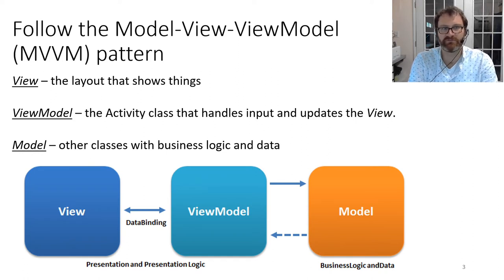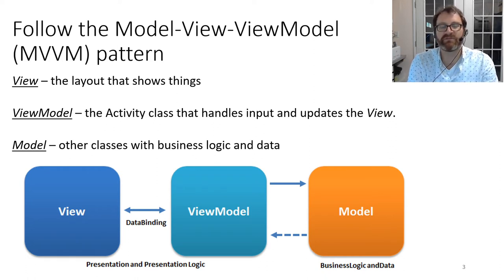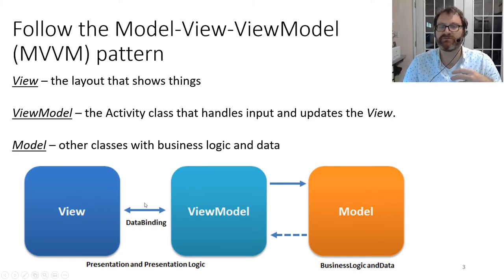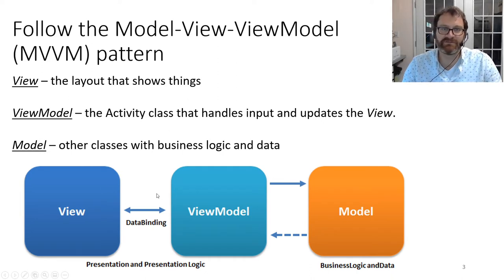The MVVM pattern is called that because of its constituent parts. The view, just like in model-view-controller, is the part of your code that shows something to the user — it is the display. In Android apps, this is the layout. The second component is the view model. The view model in Android is your activity class. So you have the view, which is the XML layout file that sets the stage, and then you have a view model, with some sort of data binding between the two — like text fields and button presses. Views and view models are tightly coupled; they do not exist without one another.